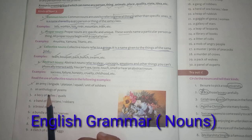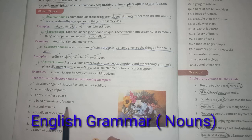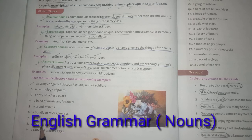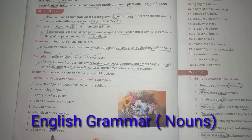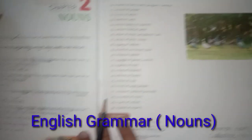More collective noun examples: an anthology of poems, a bevy of ladies, a band of musicians, a band of robbers, a brood of hens, a bundle of sticks or a bundle of nerves, a bunch of flowers, a choir of singers, a clutch of chicks, a clutch of eggs — in this way we use different words as collective nouns for different purposes.